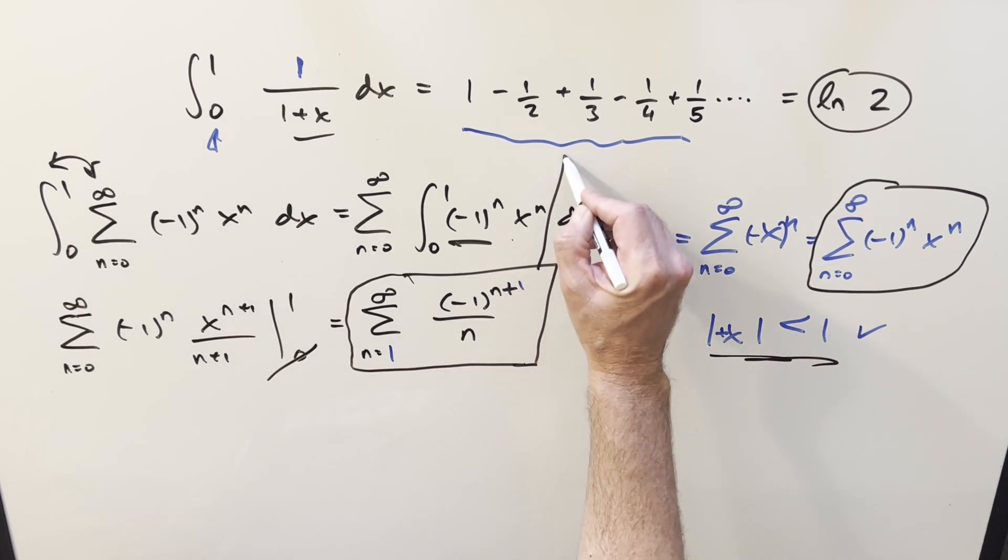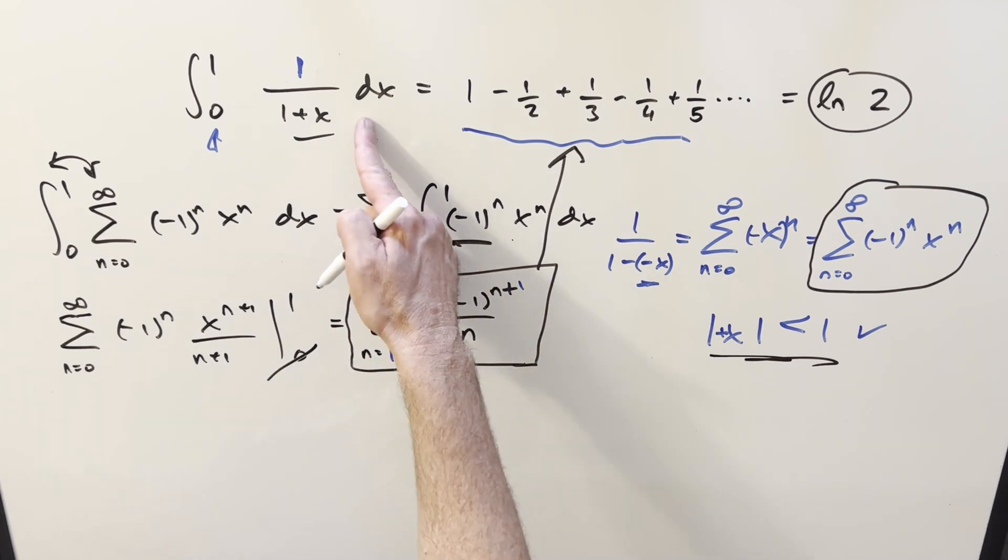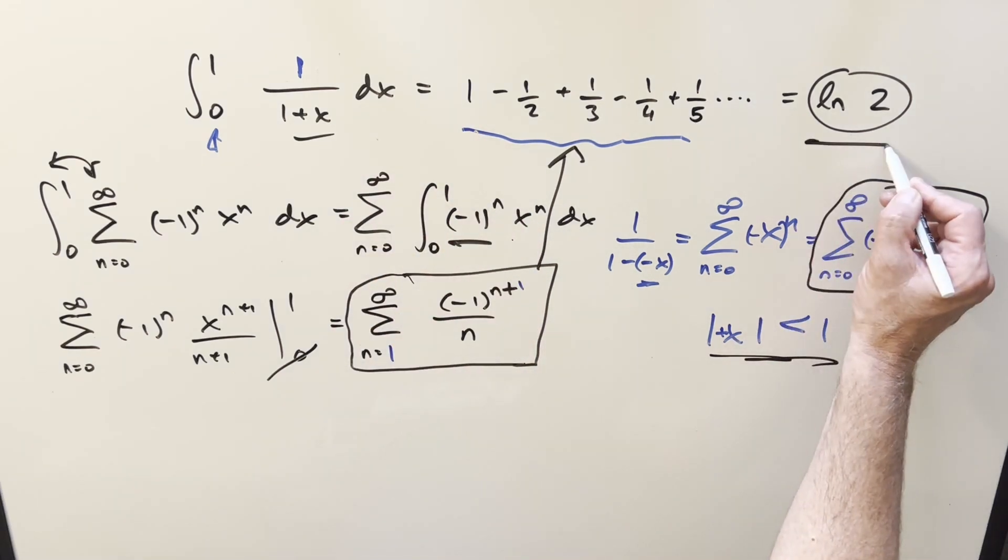This is exactly the same as this. If you just plug in terms one at a time, starting where n equals 1, you'll get back exactly this. Now, the only thing is we haven't shown, we've just shown that our integral equals this. We haven't shown yet that it's natural log 2.